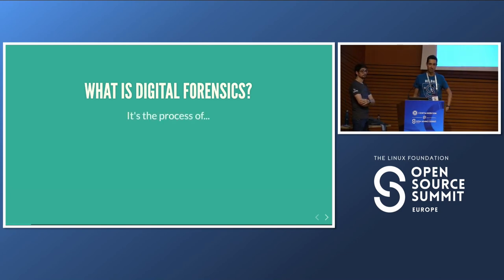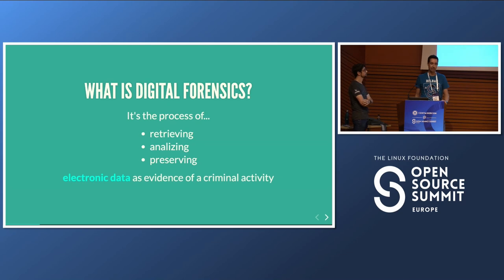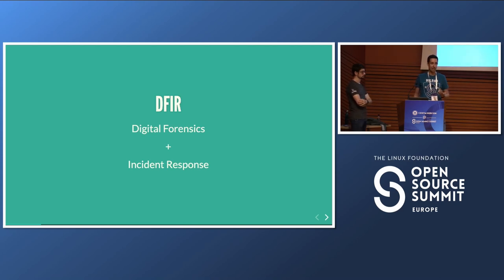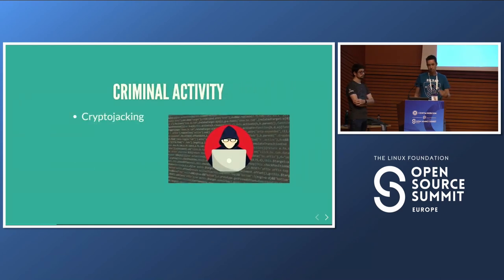So what is digital forensics? It is basically a process about retrieving, analyzing, and preserving electronic data related to criminal activity — catching criminal activity happening on our digital elements and retrieving evidence sufficient to prove a crime has been committed. You might have also heard the term DFIR, which is digital forensics and incident response — covering how you react to these kinds of attacks and how to improve, similar to a DevOps loop where you iterate and respond better when incidents happen.